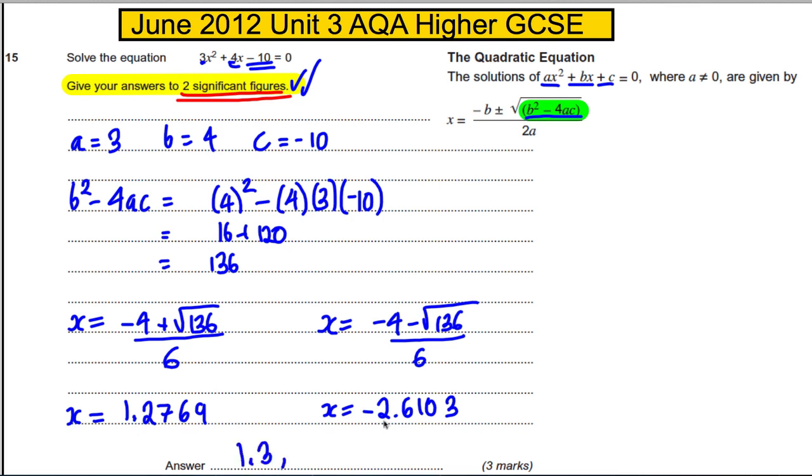Now give your answers to two significant figures. To two significant figures this is 1.3 and this one here is -2.6, both to two significant figures. And we're done for the easiest probably three marks on the paper if we just follow the simple structure.